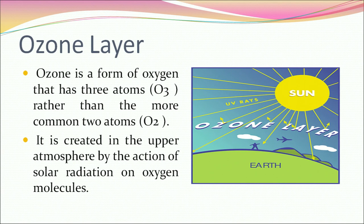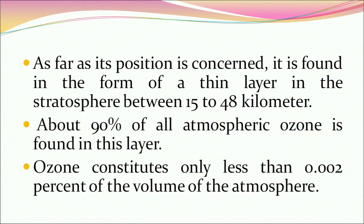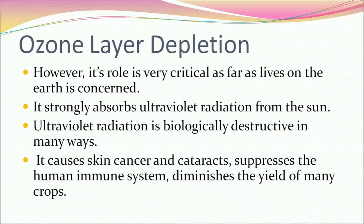Now let's talk about the ozone layer. Ozone is a form of oxygen with three atoms (O3) rather than the more common two (O2). It is created in the upper atmosphere by solar radiation acting on oxygen molecules. It is found as a thin layer in the stratosphere between 15 to 48 kilometers altitude. About 90% of all atmospheric ozone is in this layer, constituting less than 0.002% of the atmosphere's volume. It strongly absorbs ultraviolet (UV) radiation from the sun. UV radiation is biologically destructive — it causes skin cancer, cataracts, and suppresses the human immune system, diminishing the yield of many crops.